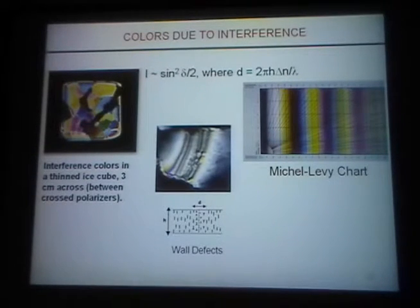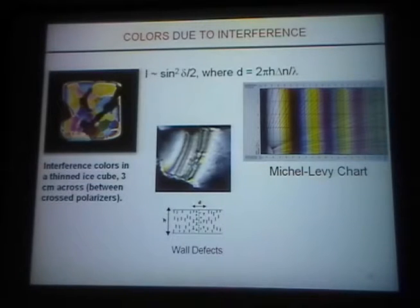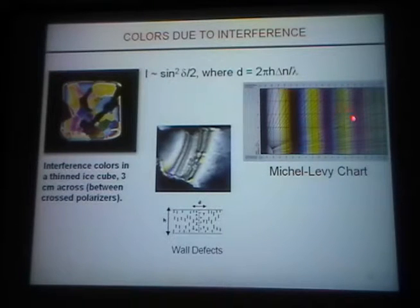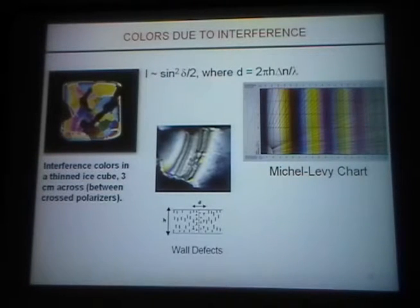There are colors due to interference — these can be considered structural colors. Here are the interference colors of a thin birefringent crystal. Each color represents different orientations in which the crystal is arranged, so the birefringence is slightly different. You can use the Michel-Lévy chart to color-match and, if you know the thickness, calculate the optical anisotropy. However, if you don't have very good color vision, you may match the wrong green and be off in determining the birefringence.